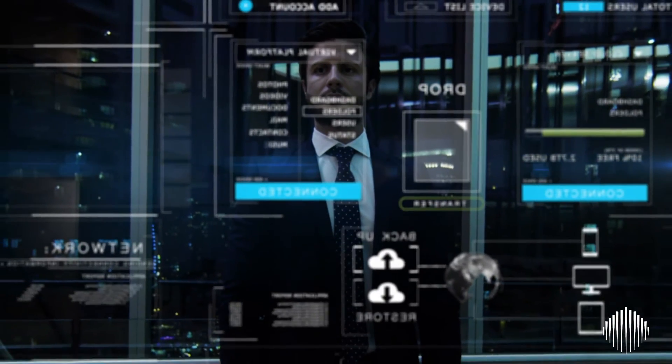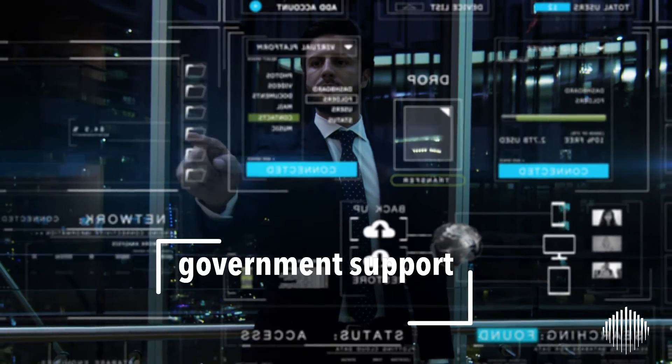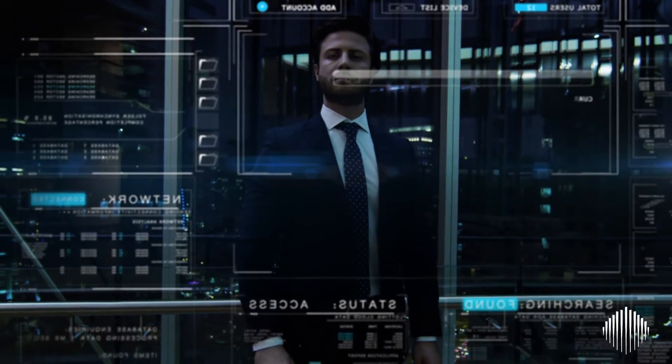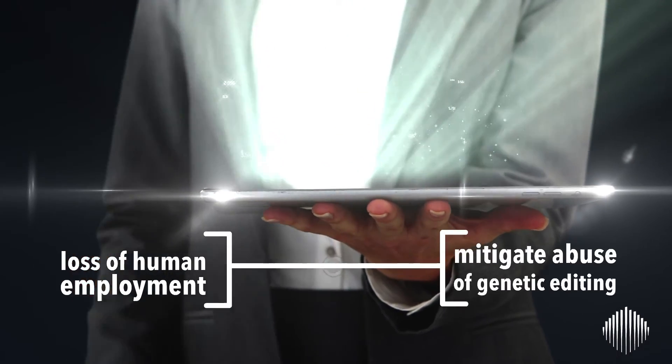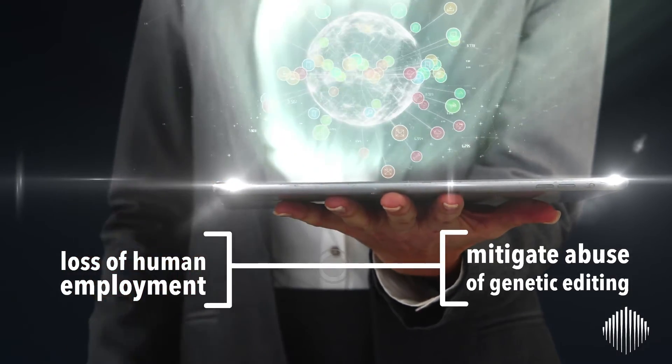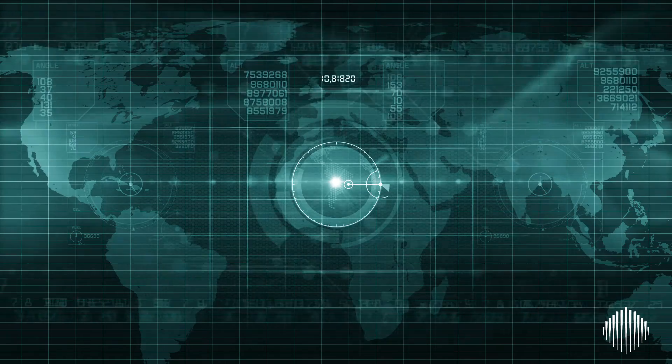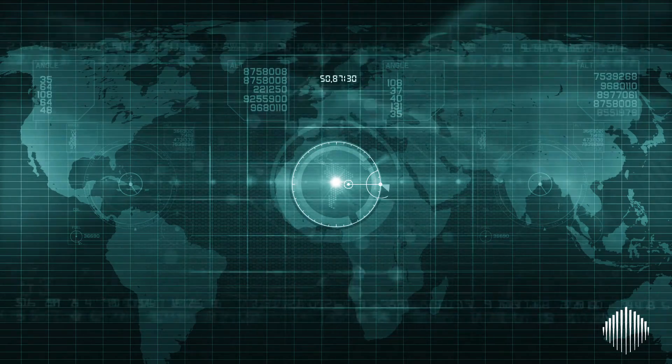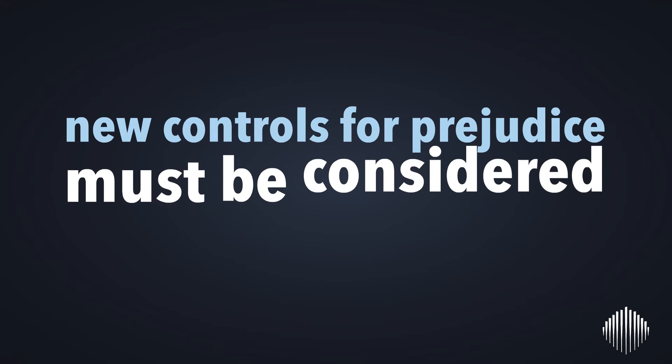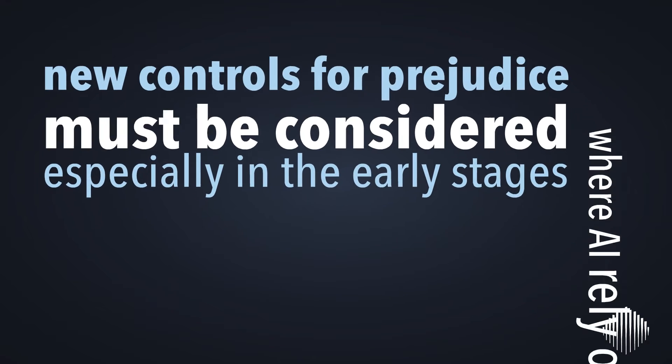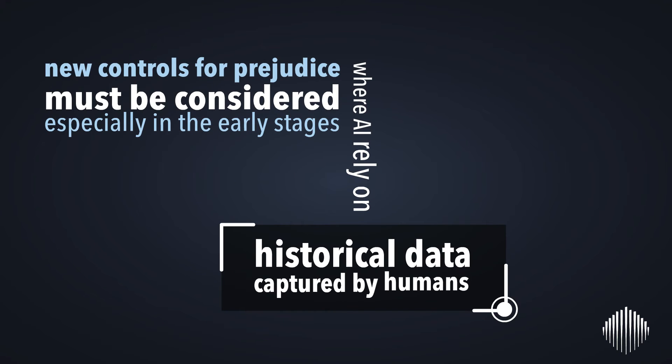Such scientific and technological advances require government support, involvement, and mediation. New legislation and policies will be needed to minimize the loss of human employment and mitigate the abuse of genetic editing technology. New law enforcement targets must be put in place in light of available predictive technologies, while new controls for prejudice must be considered, especially in the early stages where AI rely on historical data captured by humans.